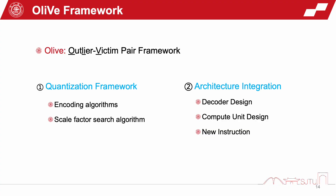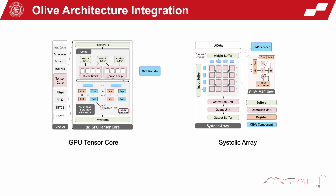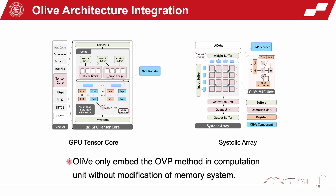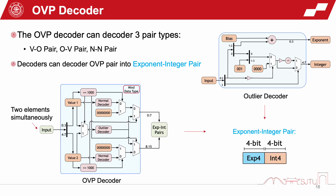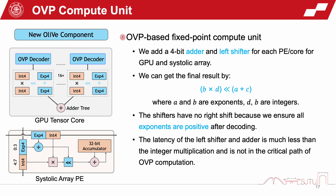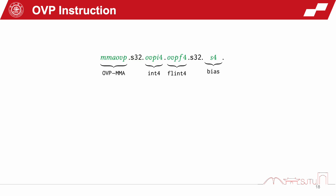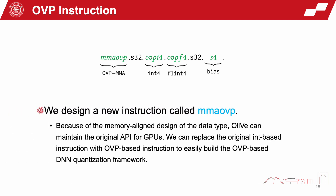The OVP framework has two main parts. First is the quantization framework, which has an encoding algorithm and a scale factor search algorithm. They make the OVP framework compatible with existing popular quantization frameworks. The second part is architecture integration — we integrate the OVP architecture with the GPU tensor core and the systolic array. We also design an OVP decoder to decode OVP quantization, a compute unit to support computation, and an OVP instruction to replace the original instruction to build the OVP-based DNN quantization framework.